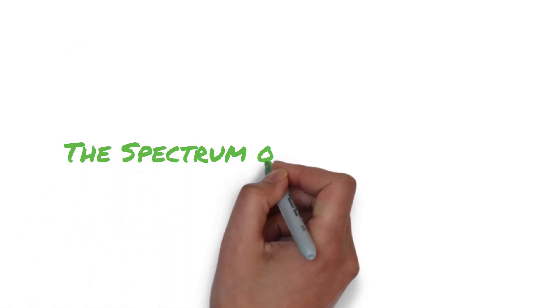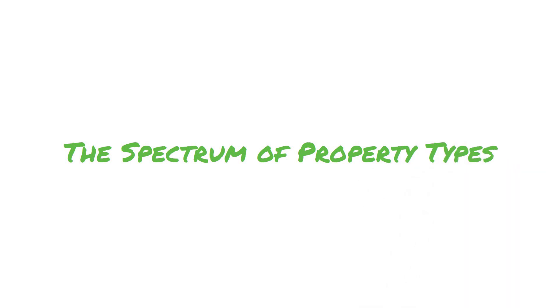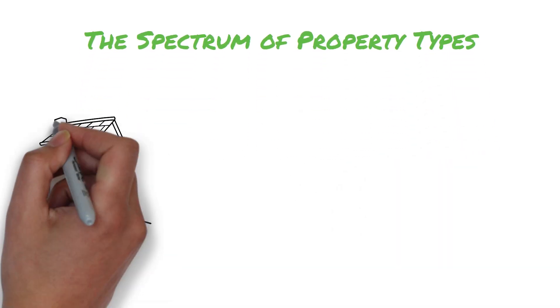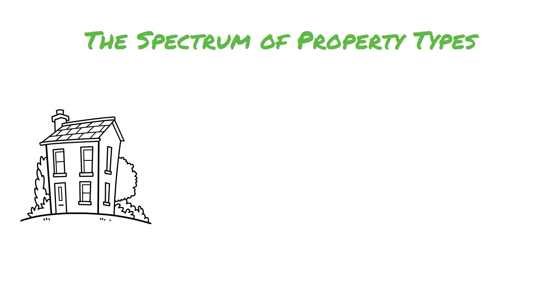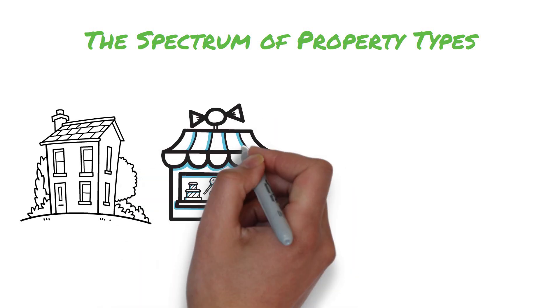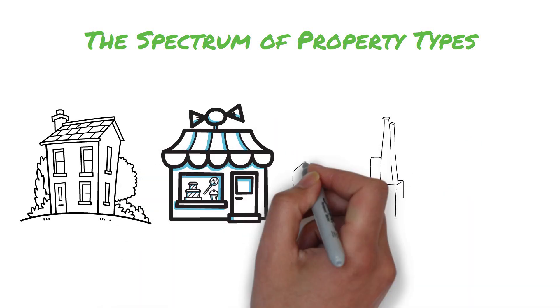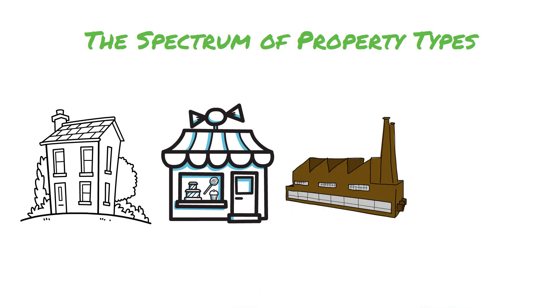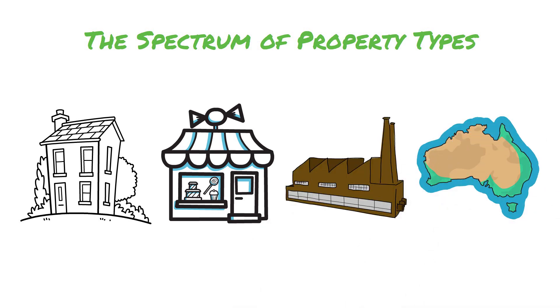The spectrum of property types. The world of real estate is a vast expanse, from the familiar terrain of residential homes to the commercial citadels that line our skylines, the industrial complexes that power our economy, and the untouched lands that promise future prosperity.